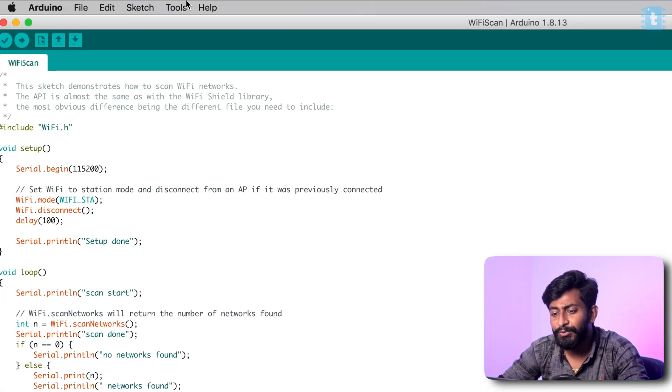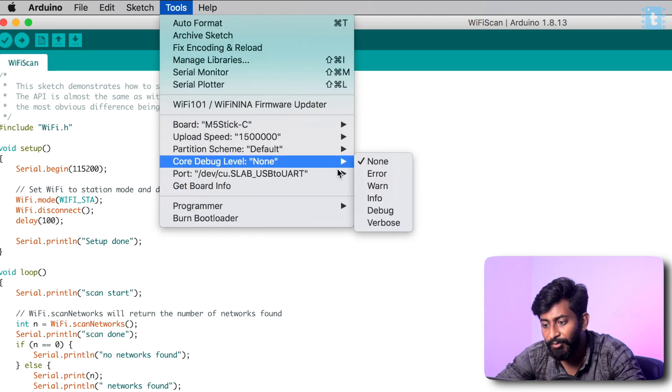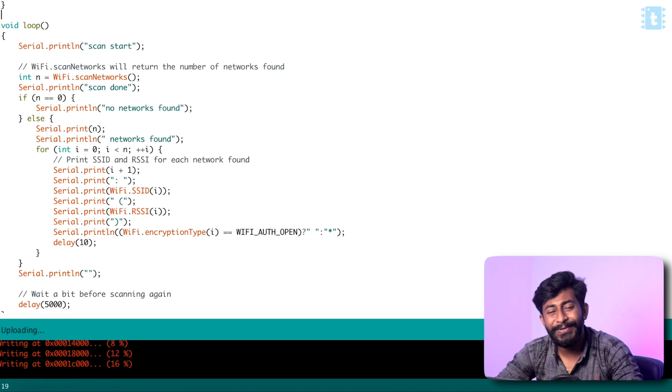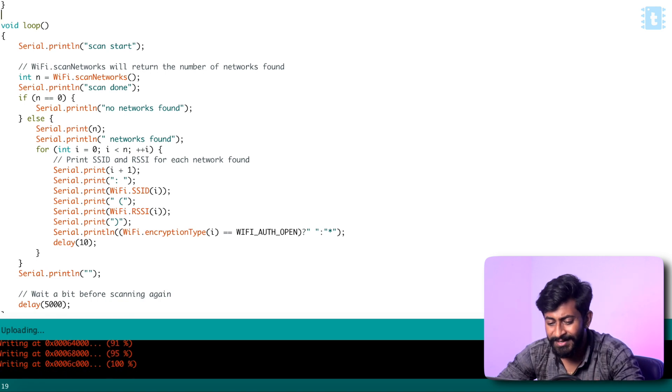I select this board and after that you have to select the port on which the ESP32 board is connected. Here I already selected that particular board and now I'll straightaway hit the upload button. As you can see, the code started uploading onto the stamp module, that means we have made the connection successfully and it successfully uploaded as well.